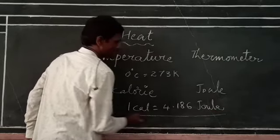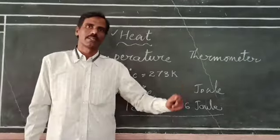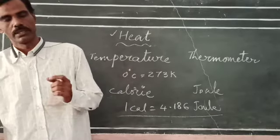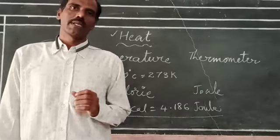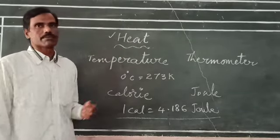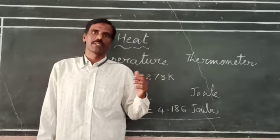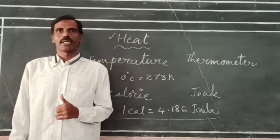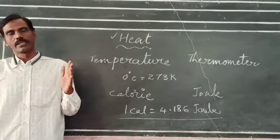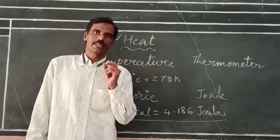One calorie is equal to 4.186 joules. This is again useful to convert one system of unit to another. Now we are going to discuss thermal equilibrium. As we discussed, heat is a form of energy which flows from a body at higher temperature to the body at lower temperature. This flow of energy continues till the two bodies reach the same temperature.